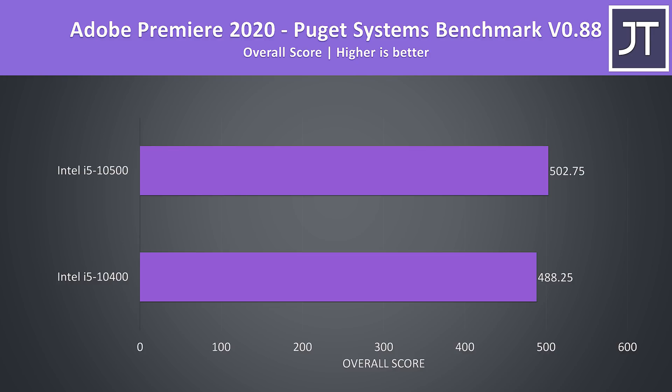Premiere was also tested using the Puget Systems benchmark tool. This tests more than just exporting, such as live playback, and with more factors considered than just export time, the 10500 was only scoring 3% higher.